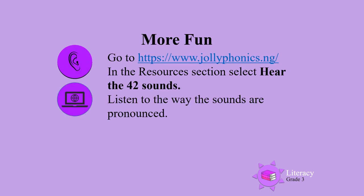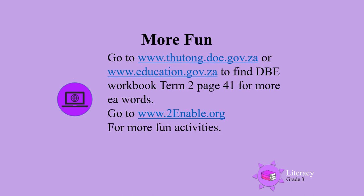For more fun, go to the Jolly Phonics website and in the resources section select 'Hear the 42 Sounds,' then listen to the way the sounds are pronounced. You can also go to the DBE website and find the DBE workbook term 2, page 41, for more E-A words — words that have the two letters E and A that say E in them. You can also go to www.2enable.org for more fun activities.